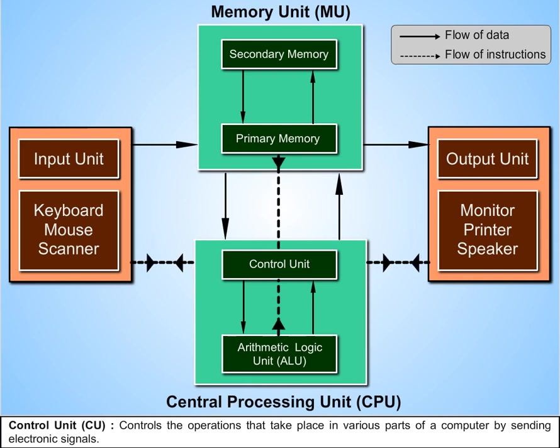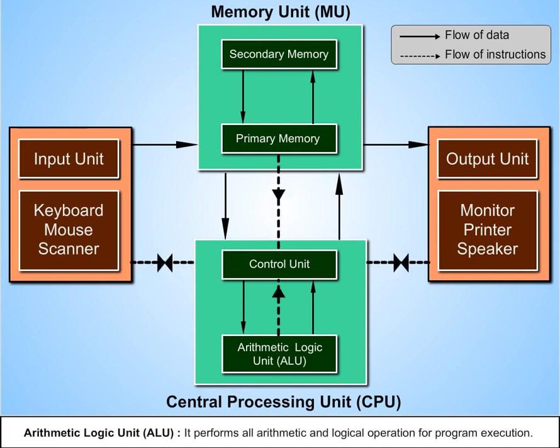Control Unit CU controls the operations that take place in various parts of a computer by sending electronic signals. Arithmetic and Logical Unit ALU performs all arithmetic and logical operations for program execution.